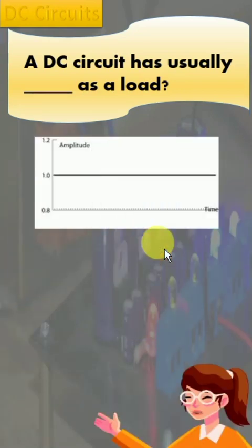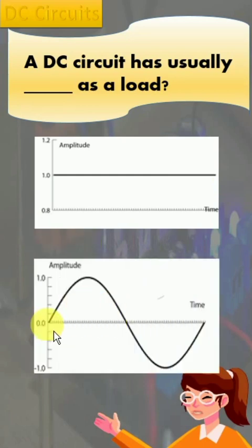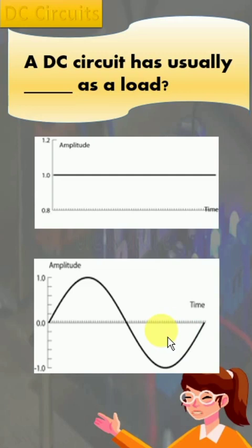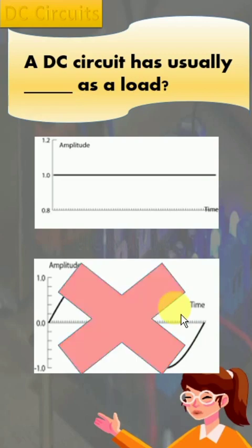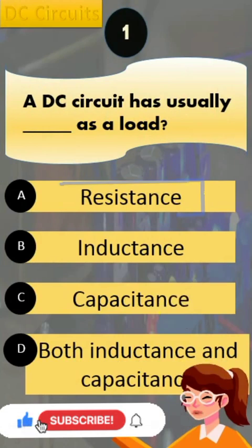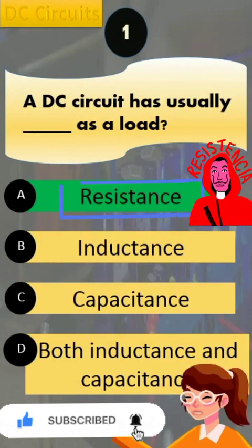In a DC circuit, the value of current or voltage remains constant and does not change with time. It does not affect the phase. As a result, the effects of inductance and capacitance won't be felt by the circuit because there are no fluctuations at all, as these fluctuations are observed only in inductive and capacitive loads, not in a resistive load. Therefore, the answer to the question is resistance — a DC circuit has usually resistance as a load.